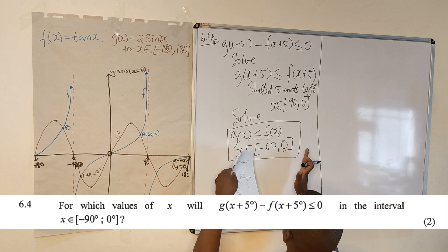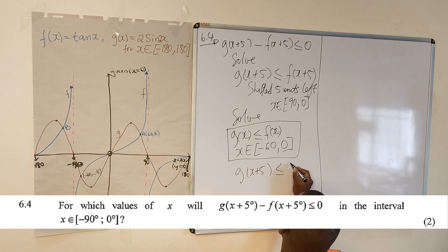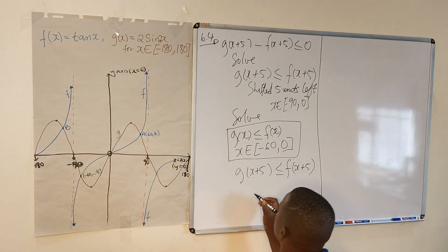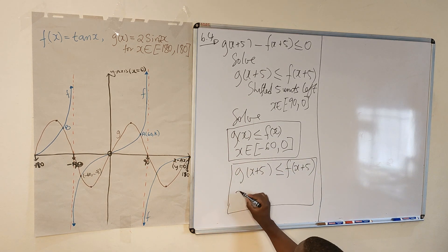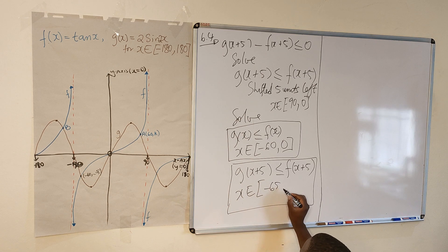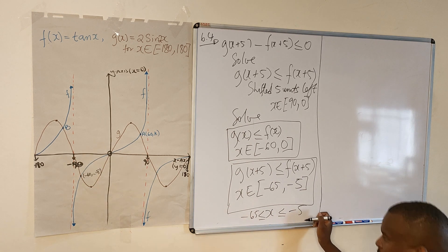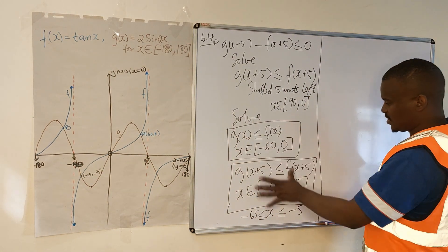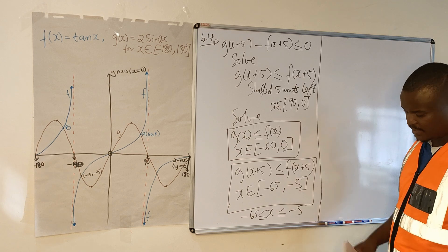Now for the shifted version, you just shift what you have to the left by 5. So g(x+5) less than or equal to f(x+5) gives solutions x ∈ [−65, −5], because you are just shifting all the boundary values 5 units to the left. That's how you do this one.